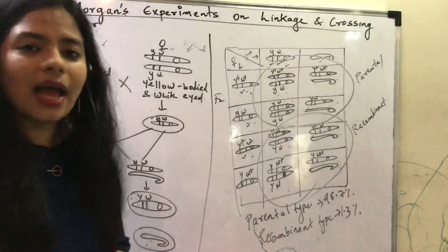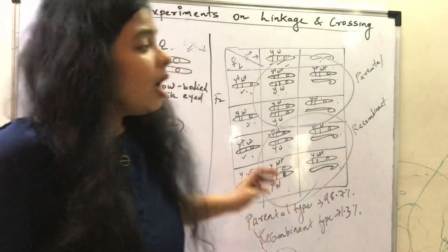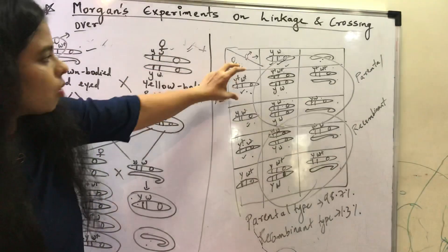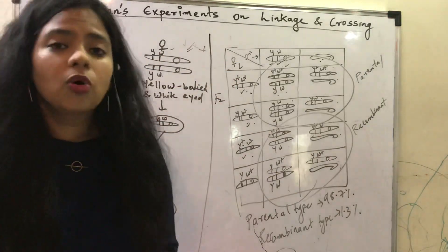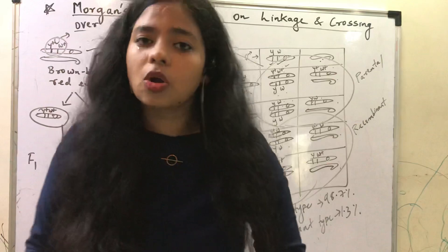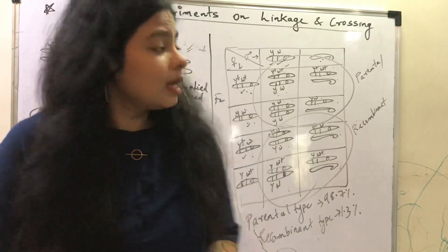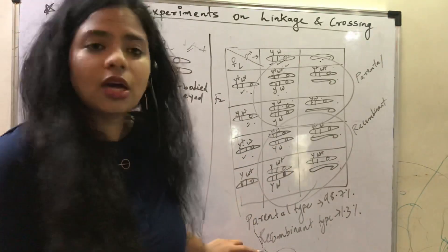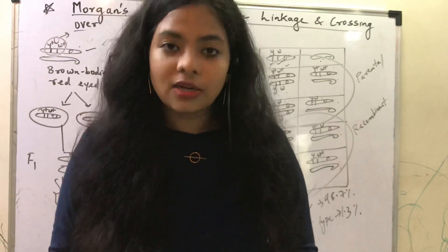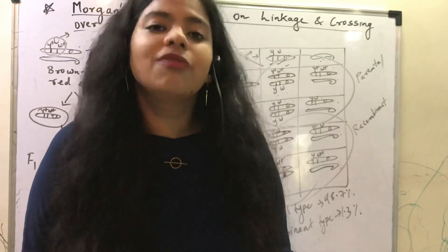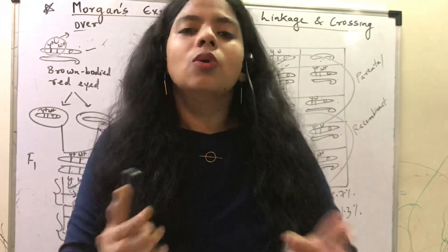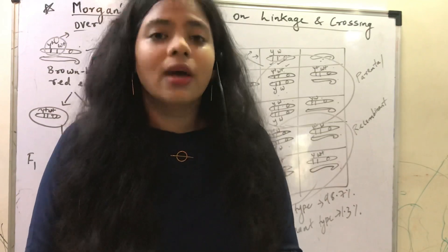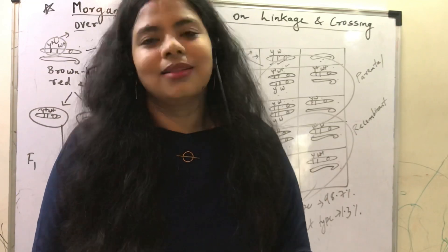I hope you have understood this. You just have to show the gametes and you will understand how to carry out the cross and how these percentages are obtained. Morgan's crosses are clear now. I hope you have understood this video. If you like the video, do like, share and subscribe to my channel. Thank you and keep watching.